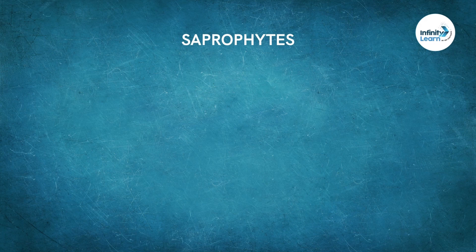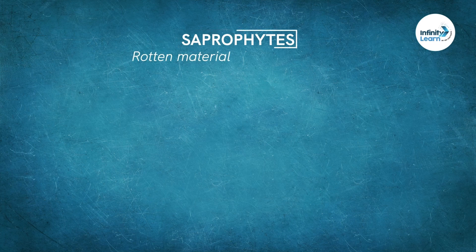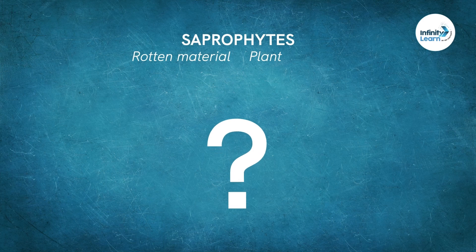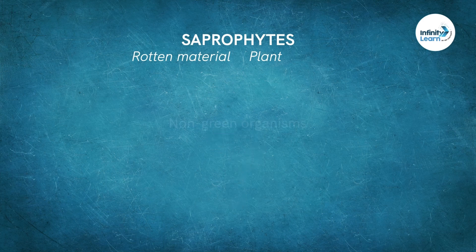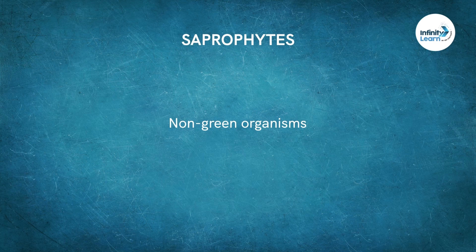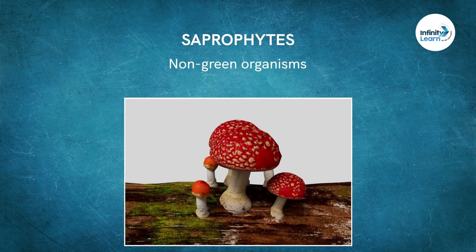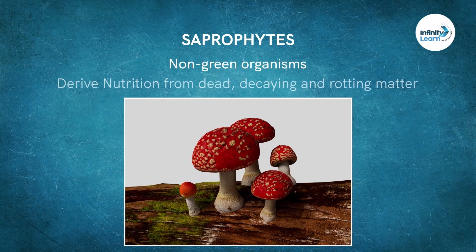Let's begin with the saprophytes first. Their name is made up of two parts: 'Sapros' meaning rotten material, and 'Phyte' or 'Phyton' meaning plant. But they are not rotten plants — these are non-green organisms, for example fungi, and they derive nutrition from dead, decaying, and rotting matter. That is why they are named saprophytes.